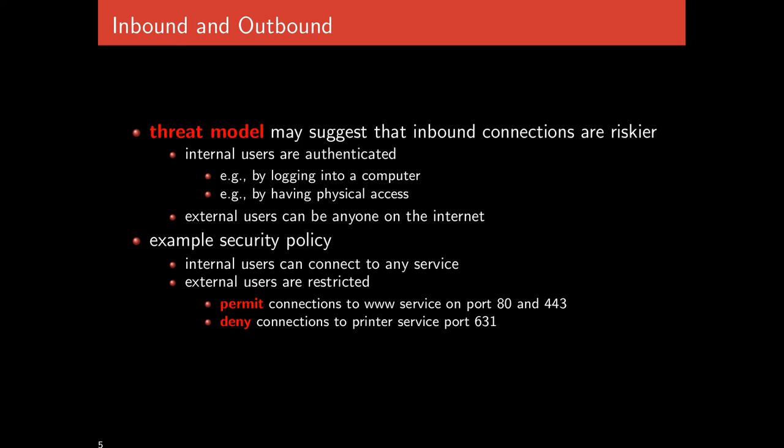Other threat models exist — for instance, if you want to prevent people under your control from accessing certain information, you might be more concerned about internal users and what they're allowed to access. An example security policy could say: internal users can connect to any service freely, while external users are restricted — we permit connections to HTTP on port 80 and HTTPS on port 443, but deny connections to the printer service on port 631. This allows internet users to access a web page but not send print jobs to internal printers.